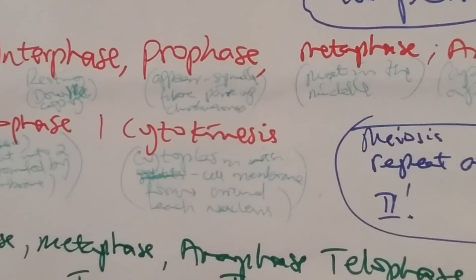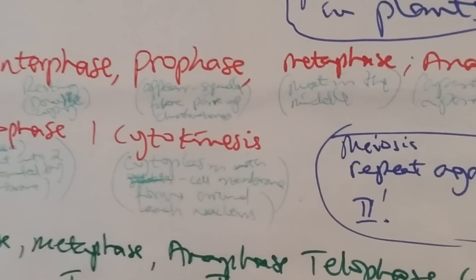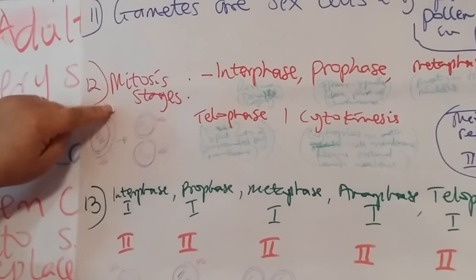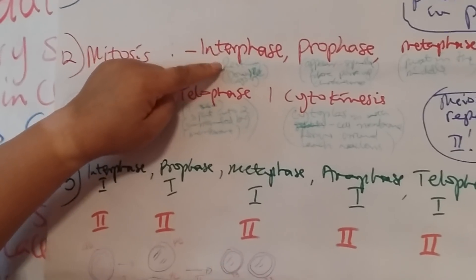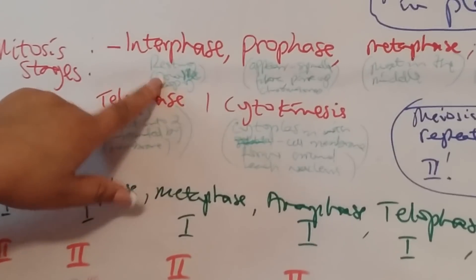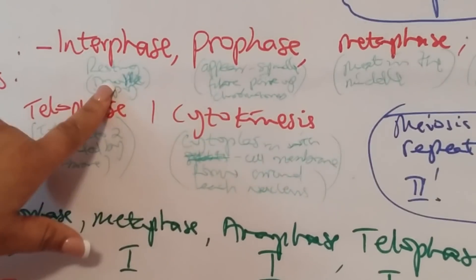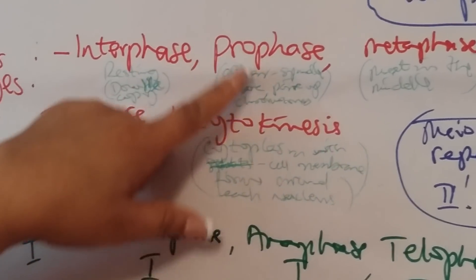To outline the stages of mitosis very briefly: you have interphase, which is the resting stage, but doubling of chromosomes and copying also happens at that stage.